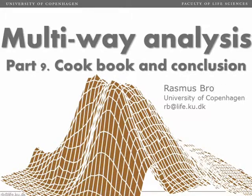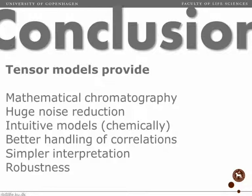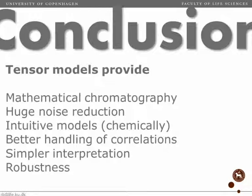And finally, we get to the conclusion of these videos on PARAFAC modeling and multi-way analysis. What has hopefully been shown is that tensor models are really nice. They give us what we call mathematical chromatography — the unique models can help us uncover or recover underlying signals and mixtures directly. That is enormously important in a number of applications. The structure of the tensor models gives us a lot of noise reduction and very often gives us intuitive models, because if we have multi-way data, then a multi-way model is going to be the natural model to use.